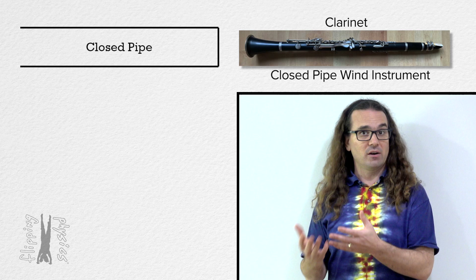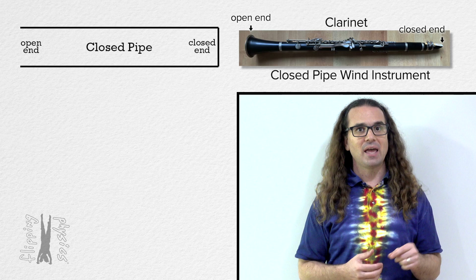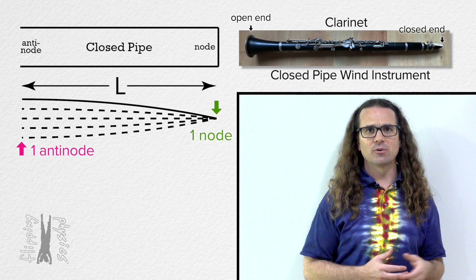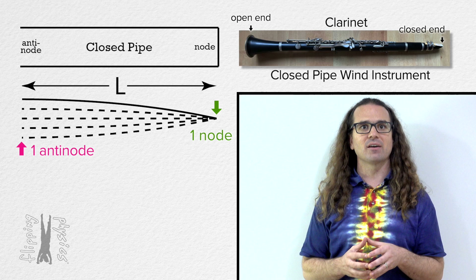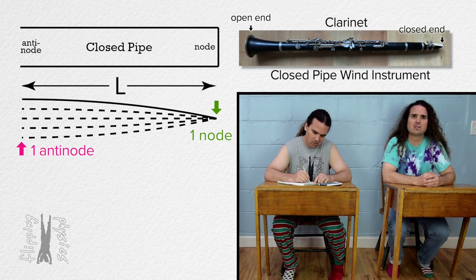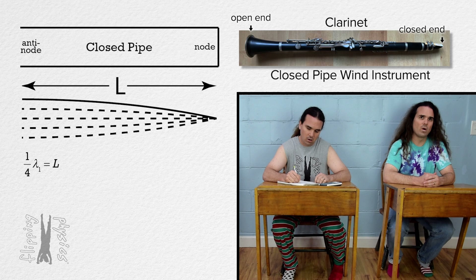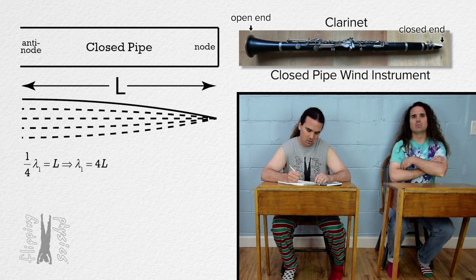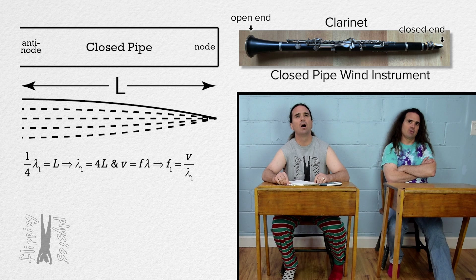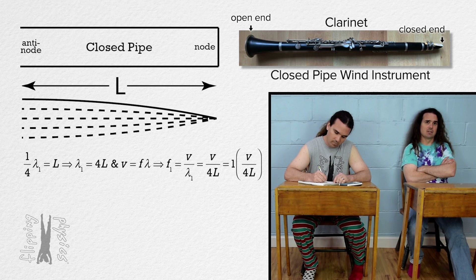Now let's move on to closed pipe instruments like a clarinet. Closed pipe instruments have one closed end and one open end, meaning the closed end is a node and the open end is an anti-node. How many wavelengths equal the length of the pipe in this first standing wave pattern? That is just one-fourth of a wavelength. The wavelength of the wave equals four times the length of the pipe. Since frequency equals speed divided by wavelength, frequency equals speed divided by 4L — and we put a 1 in front to indicate the first harmonic and fundamental frequency.